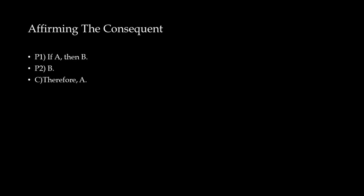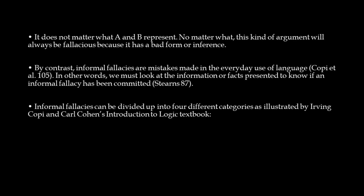The mere fact that my mom is happy does not mean I took out the trash. After all, she could be happy because she is on vacation or listening to beach music. This formal fallacy is known as affirming the consequent, which has the form: If A, then B. B, therefore A. It does not matter what A and B represent — this kind of argument will always be fallacious because it has a bad form or inference.